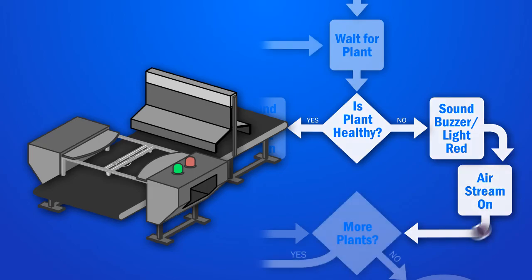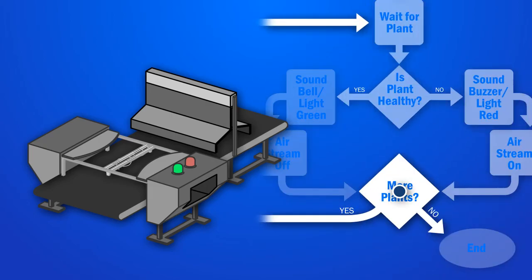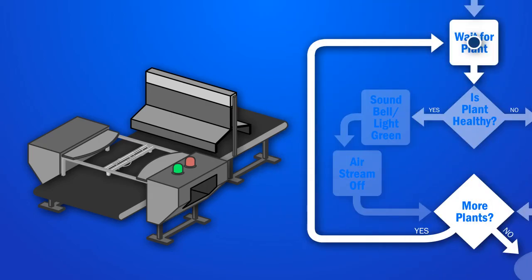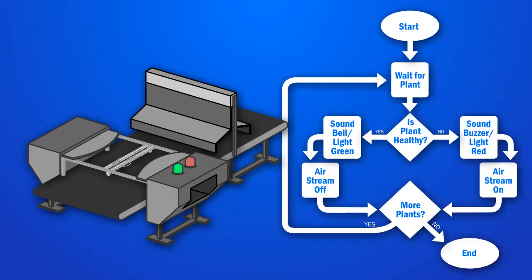And then we follow the arrows. Notice that the arrows lead back up to a block we've already been to. This makes the robot repeat the same steps again and again, so every plant will get the same treatment.